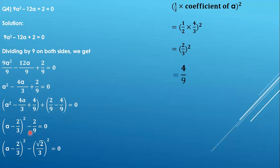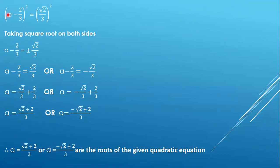We will send this 2/9 to the right hand side and write it in the form of a square. We get (a - 2/3)² = (√2/3)².